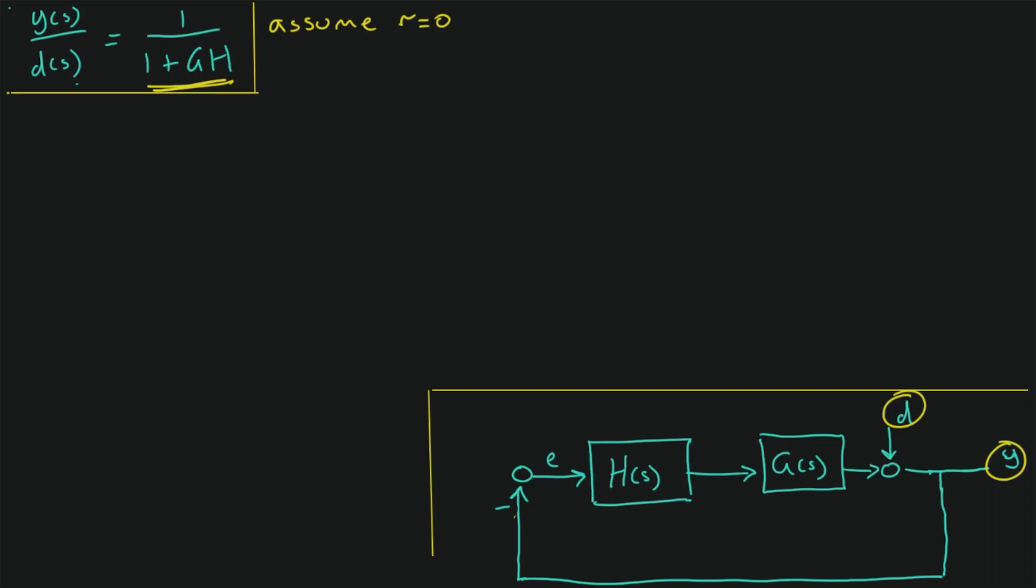And we do exactly what we did last time. So starting at our output Y, let's write down our equation Y equals, and we have a summation here. So these two things are summed. And I'm just going to give this point here an arbitrary letter. Let's call it X. And so Y in this case is equal to D plus X.